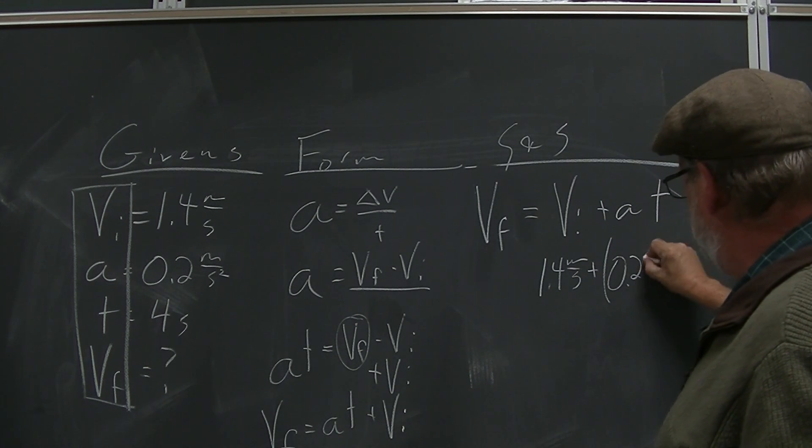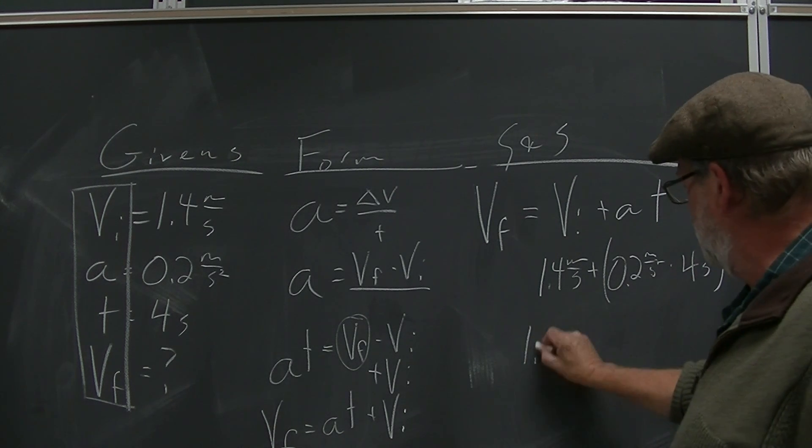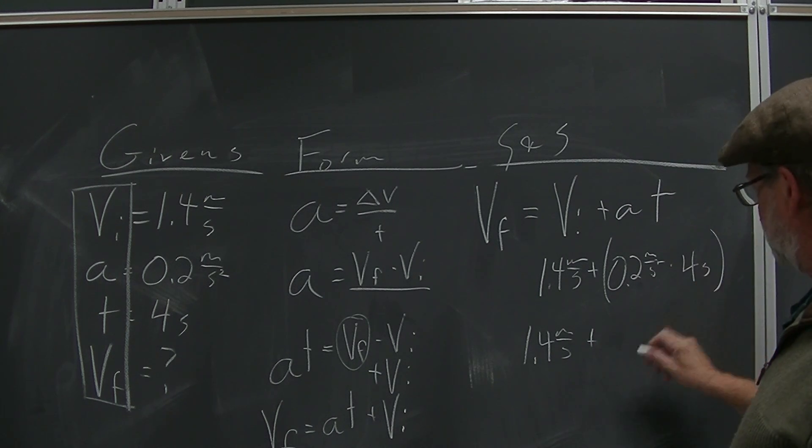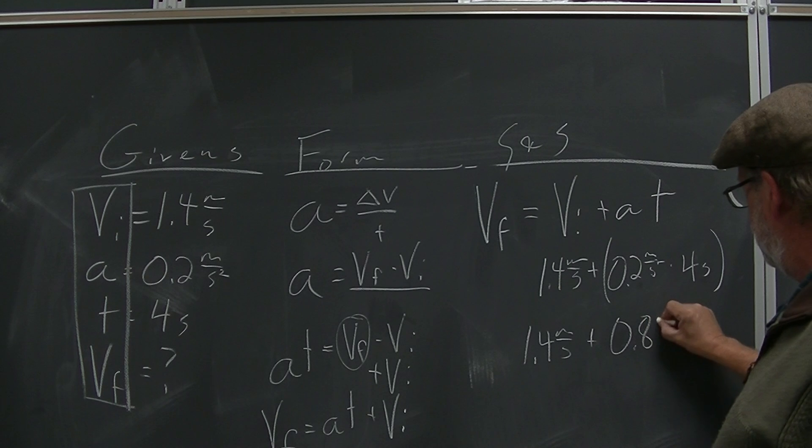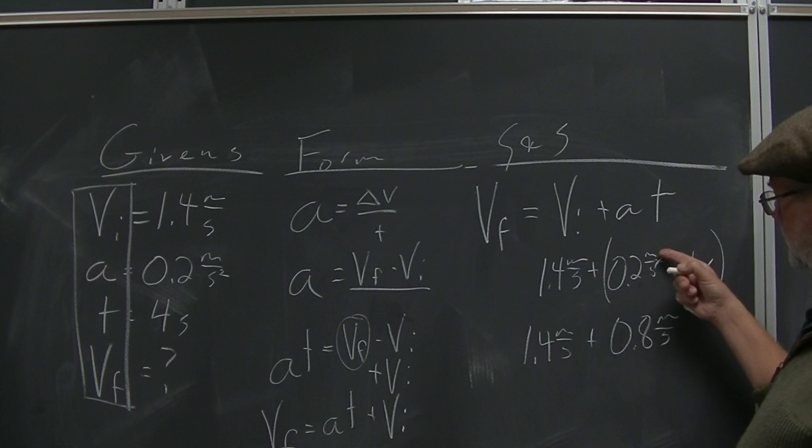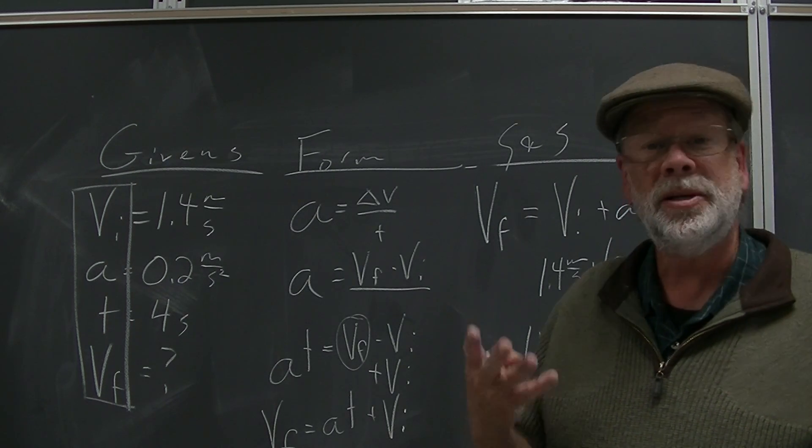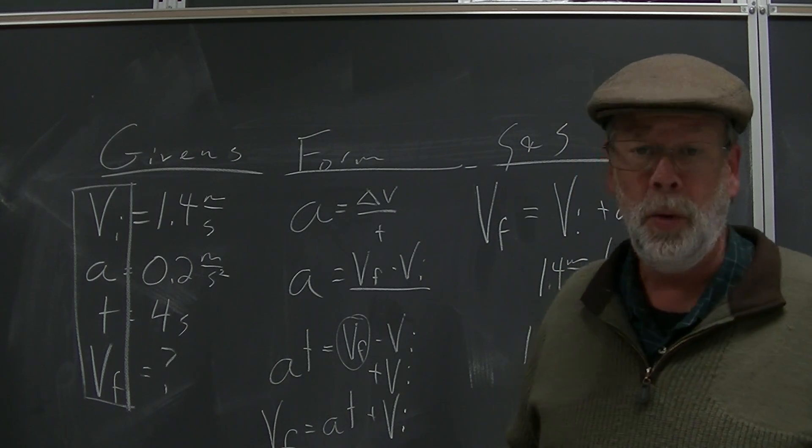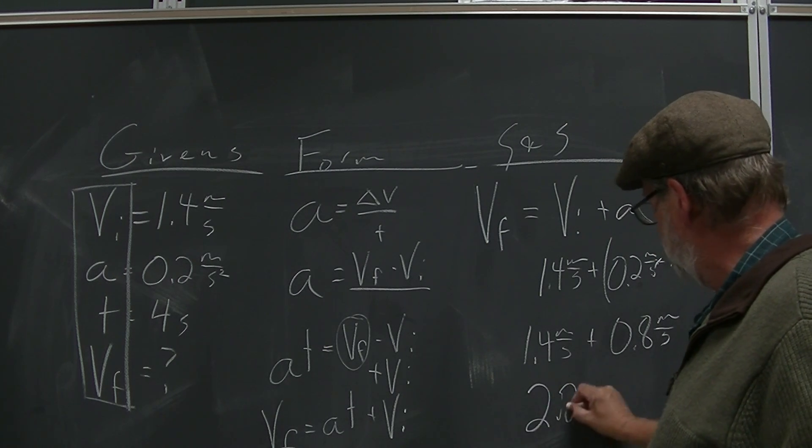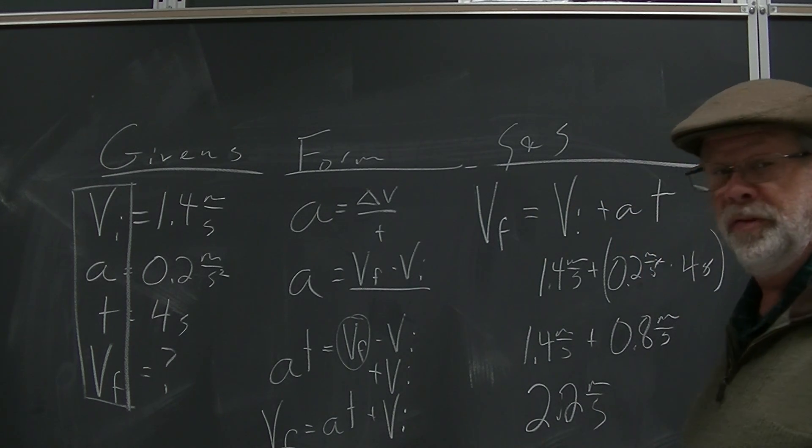Take a look: VI is 1.4 meters per second plus, let's do parentheses, 0.2 meters per second squared times four seconds. So you have 1.4 meters per second plus, what's 0.2 times four seconds? 0.8 meters per second. Notice the second here cancels the second squared there, so it's meters per second adding to meters per second. That works. Can you ever add meters per second to meters per second squared? Please say no.